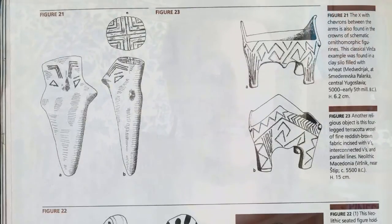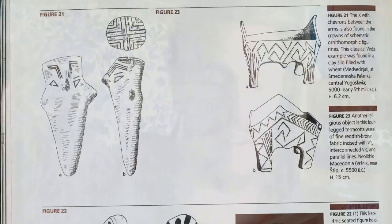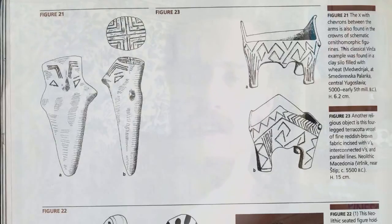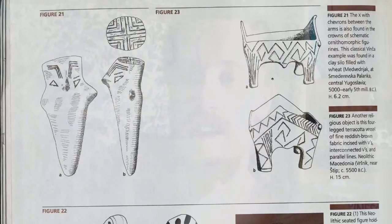Look at these Minoan seals — one is anthropomorphic with eyes and chevrons as eyebrows, little hands, and ending in a V again. Figure 21: the X with chevrons between the arms is also found in the crown of a schematic ornithomorphic figurine from the classical Vinca example, and it was found inside a clay silo filled with wheat. Holy crap — this bird goddess figurine, also clearly functional as a stamp, was associated with a wheat-storage vessel, layering symbols of life: the V for the pubic triangle, meanders for water, and wheat as sustenance.